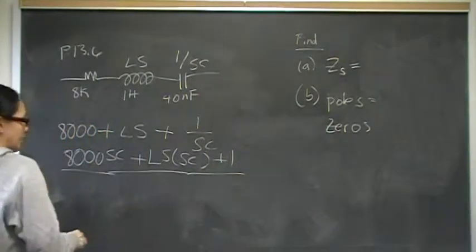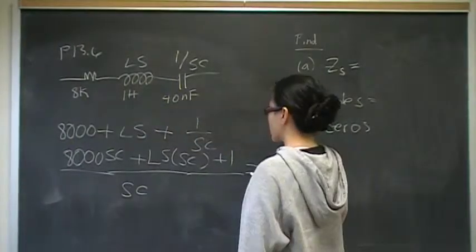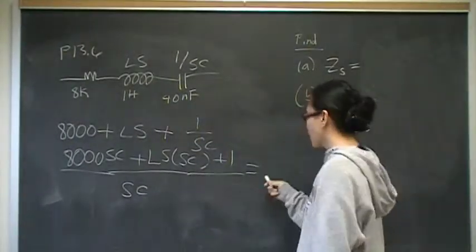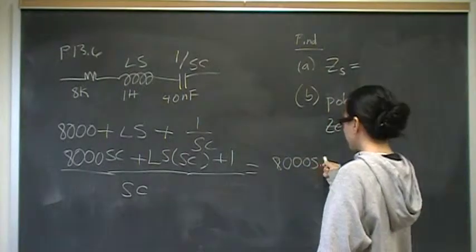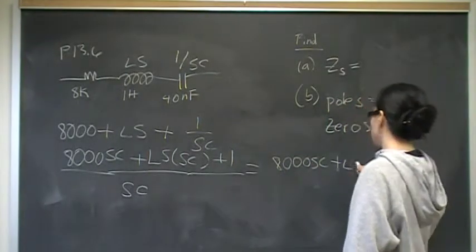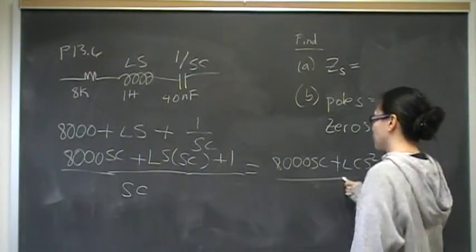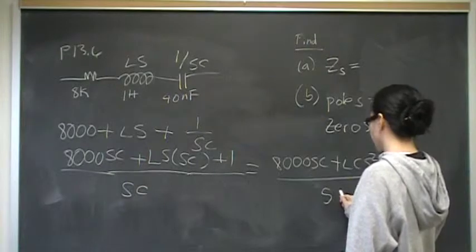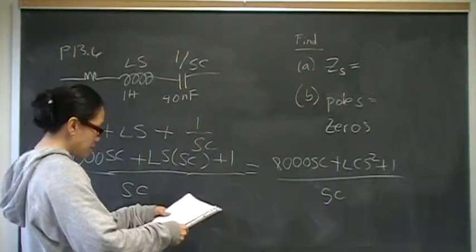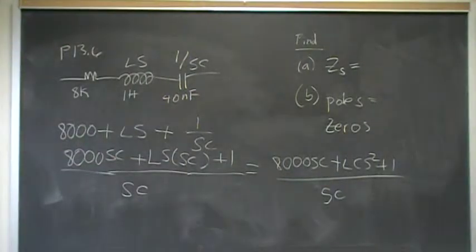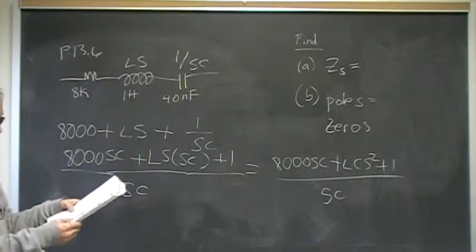Now, everybody has the same common denominator of Sc. So, that's equal to 8,000 Sc plus Lcs squared plus 1 over Sc. Just checking myself because it's so easy to make mistakes.